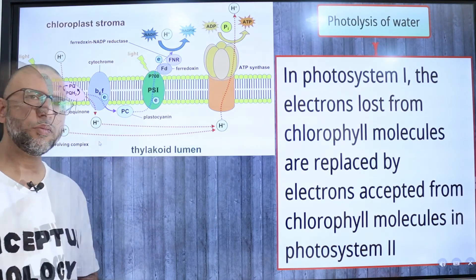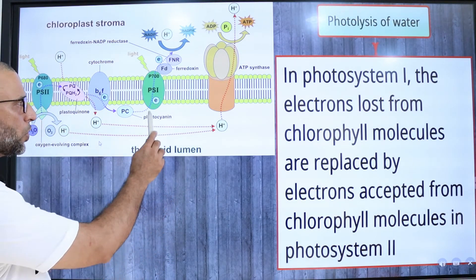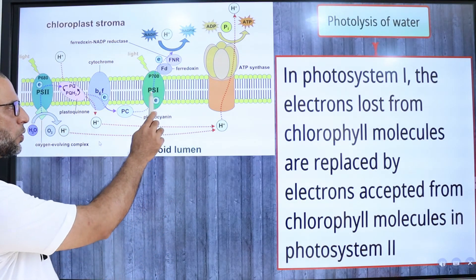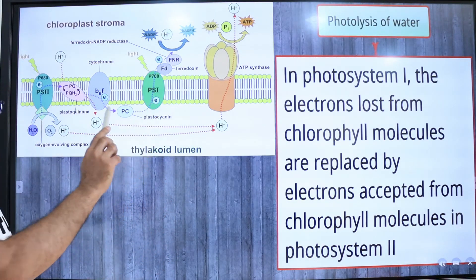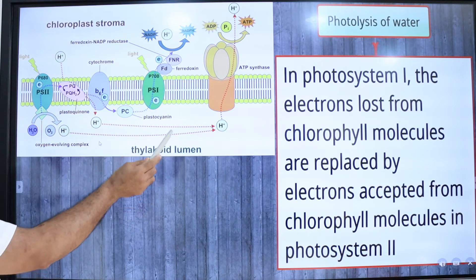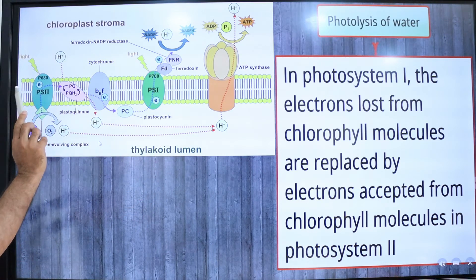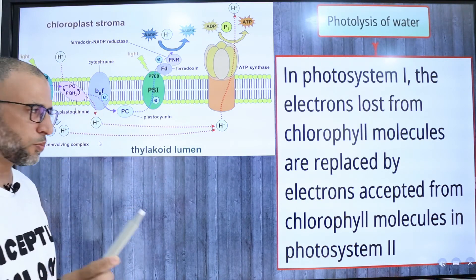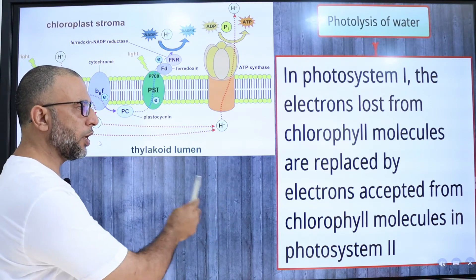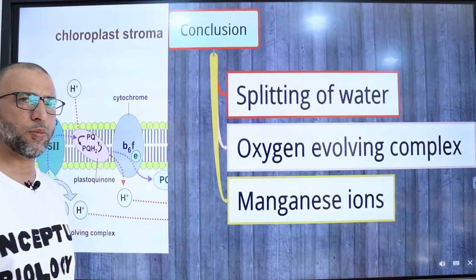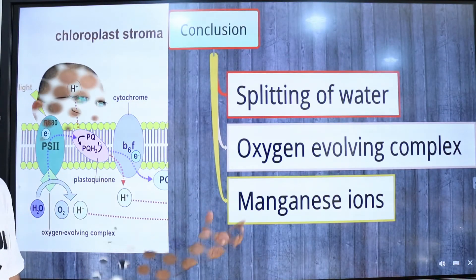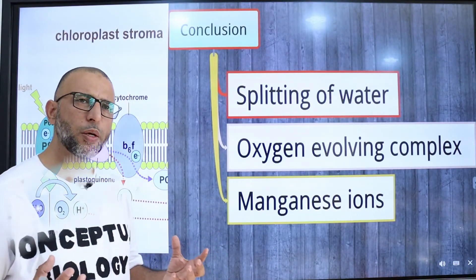The loss of electrons in photosystem I are replaced by the electrons of photosystem II, and in photosystem II the loss of electrons are replaced by the photolysis of water.